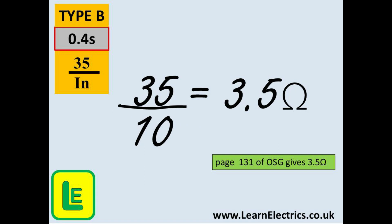Now we can try the formula for a 10 amp circuit breaker. Type B again and still a 0.4 second disconnection time. 35 divided by the 10 amp rating gives us a maximum measured ZS of 3.5 ohms. If our actual circuit measurement is less than 3.5 ohms then we have a good circuit as far as ZS is concerned. And look at the figures given on page 131 of the on-site guide for a type B 10 amp breaker: 3.5 ohms. And that is exactly the number that we have.